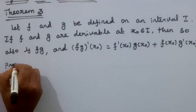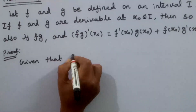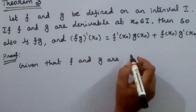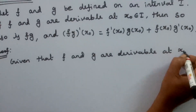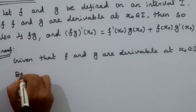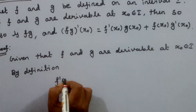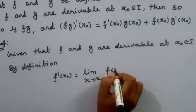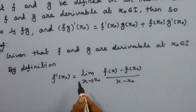Let's discuss the proof. Given that f and g are defined on an interval I and are derivable at x0 belonging to I. By definition, f dash of x0 is equal to limit x tends to x0 of f of x minus f of x0 divided by x minus x0.